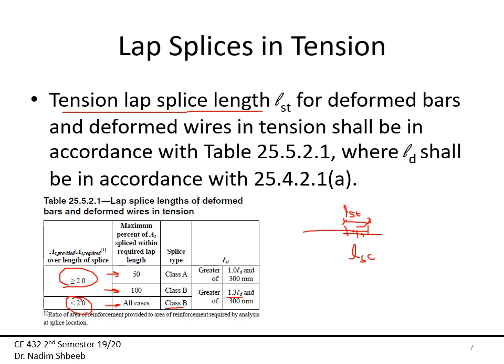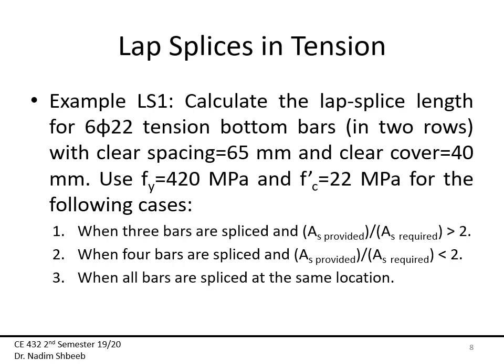If the provided-to-required ratio is greater than 2, I check the percentage of bars spliced at the same location. If 50% or fewer bars are spliced, it is a Class A splice — length is the greater of Ld or 300 mm. If more than 50% are spliced, it becomes Class B, requiring 1.3 × Ld.